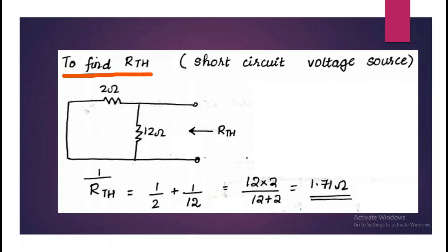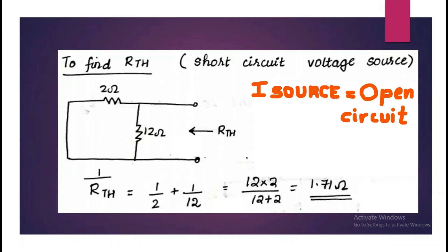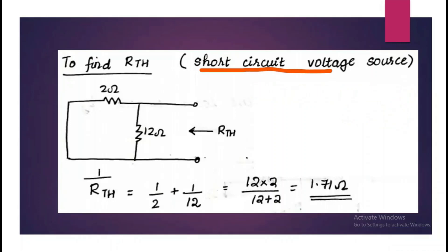Next, we have to find the Thevenin's equivalent resistance Rth. As the theorem says, replace all current and voltage sources by their internal resistances. If it is a current source, we open circuit it, and if it is a voltage source, we short circuit it. Here we short circuit the voltage source and we get 2 ohm in parallel with 12 ohm, so the net resistance would be 1.71 ohm.